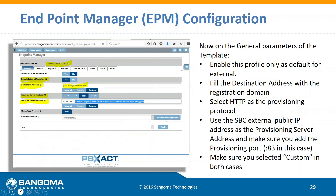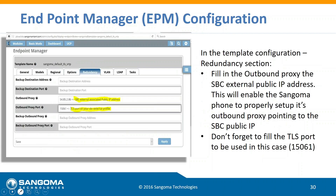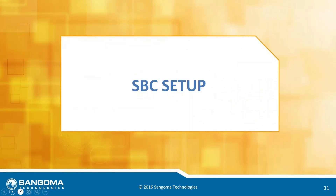We've changed the provisioning server to the external IP address of the SBC with the port, assigned the outbound proxy and outbound proxy port. Nothing else is needed on the PBX side. Now we set up the SBC side.